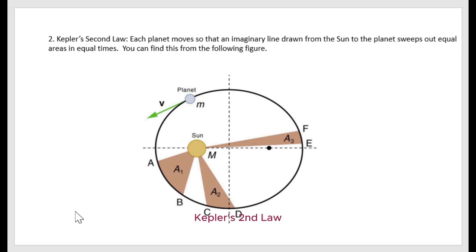Kepler's second law states that each planet moves so that an imaginary line drawn from the Sun to the planet sweeps out equal areas in equal time. You can find this from the following figure.